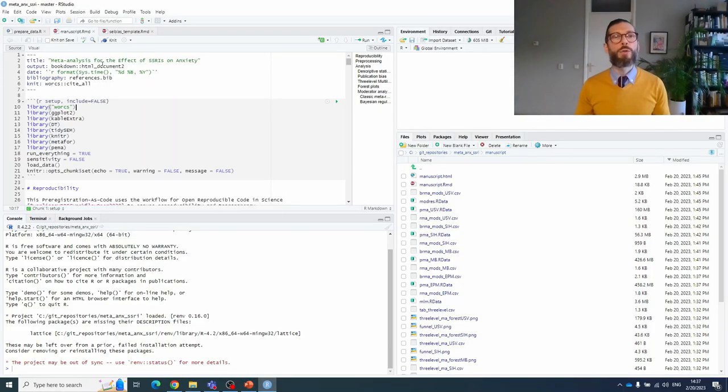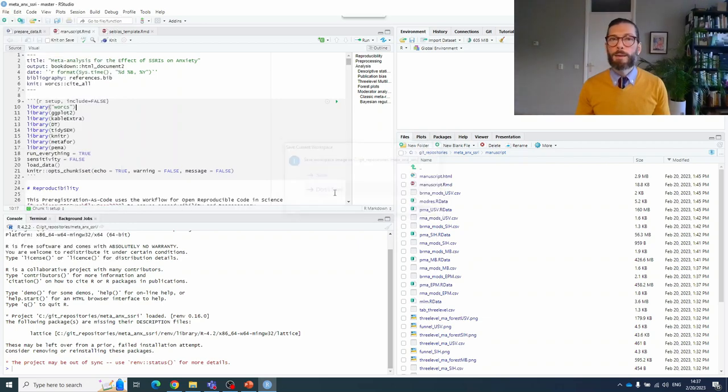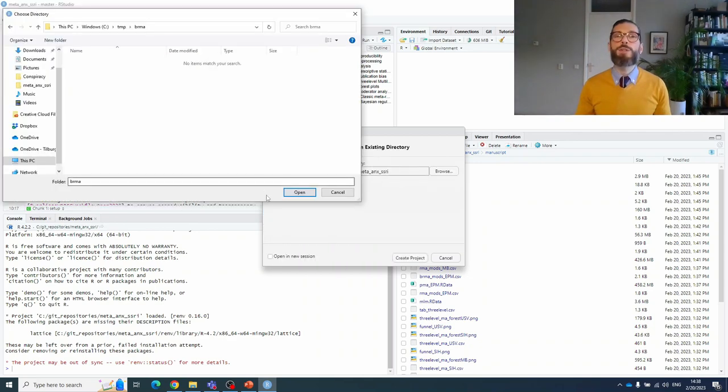Now let's look at an applied tutorial so you can use the method in your research. When you're using RStudio for your analyses, it is always important to create a new project for your analyses. So that's the first thing I'm going to do. I'm going to use an existing directory because I just created it. Specifically, I'll use this directory titled BRMA.